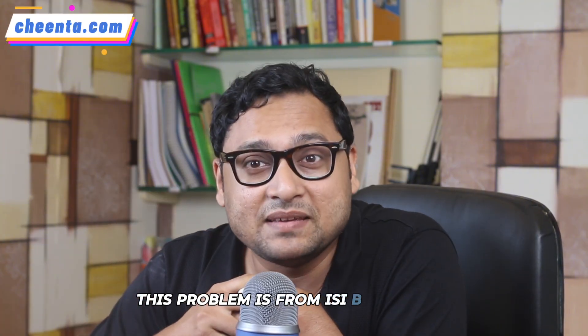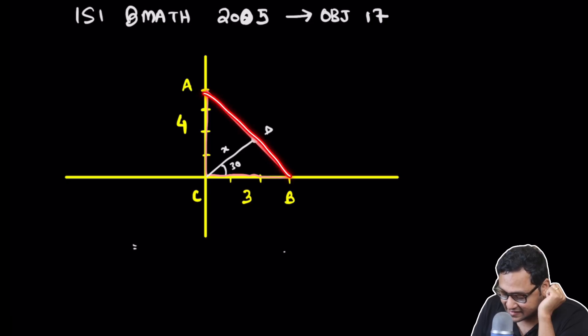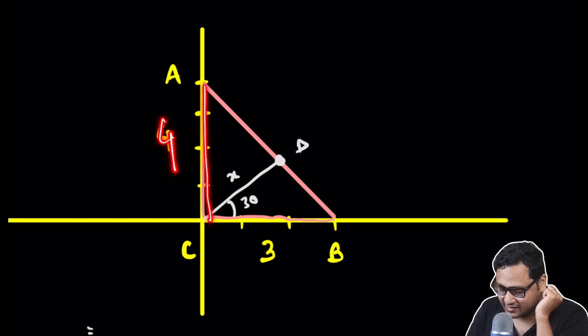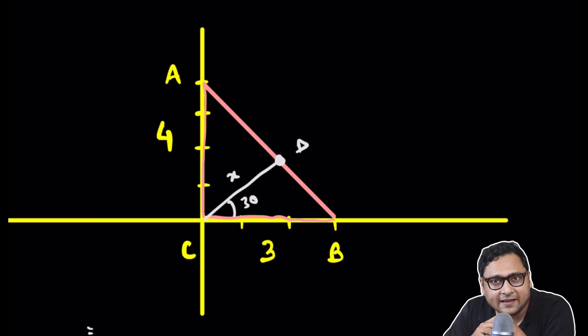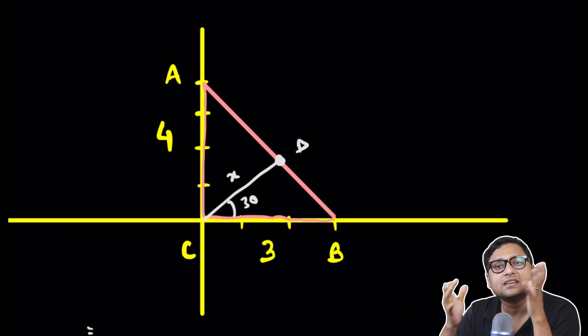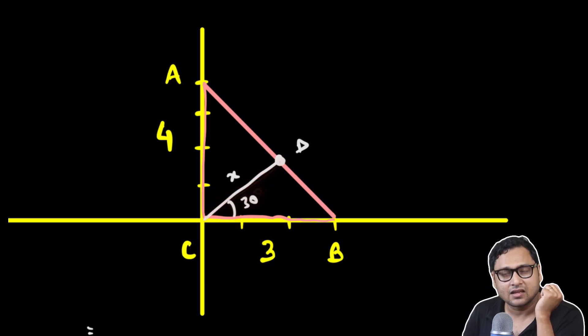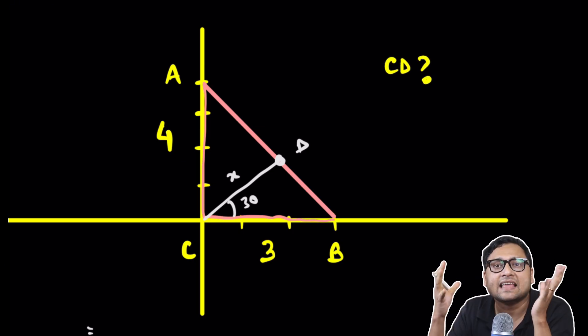This problem is from ISI BMath 2005 and it says that there is a right triangle ABC, and BC is 3, AC is 4. Naturally, AB is 5. It's a 3-4-5 triangle. It's also given that there is a line segment CD such that this angle is 30 degrees. Our goal is to find out the length of CD.